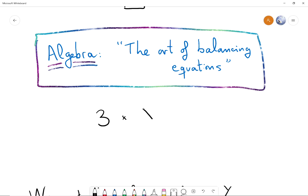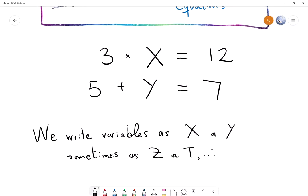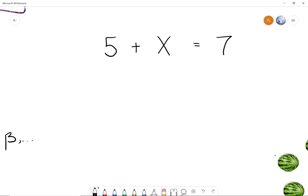We write them with a big X, like 3X equals 12, or 5 plus Y equals 7. And our task is to find out what is the value of X, or what is the value of Y. We usually write variables as X or Y, sometimes as Z or T, or sometimes even as some Greek letters like alpha and beta, if you want to learn about the Greek alphabet. And so let's get started with some equations and try to figure out some values of some variables.